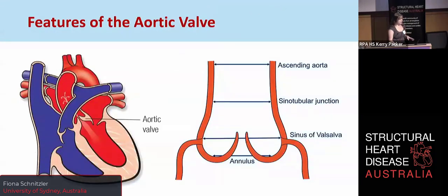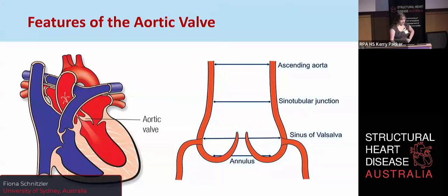When we think about the aortic valve, it's obviously very important to contextualize this understanding in terms of the left ventricle, which is the primary pump around which the rest of the heart is organized. We have blood flowing in through the left atrium, through the mitral valve here, and out through the left ventricular outflow tract, through the aortic valve, and into the ascending aorta.